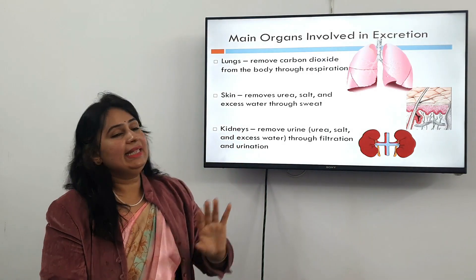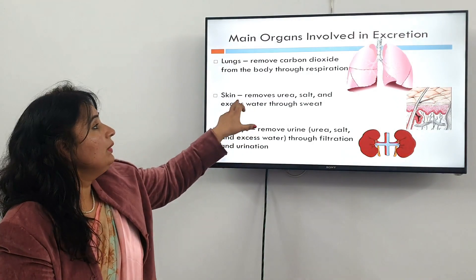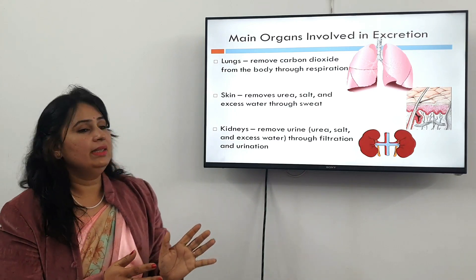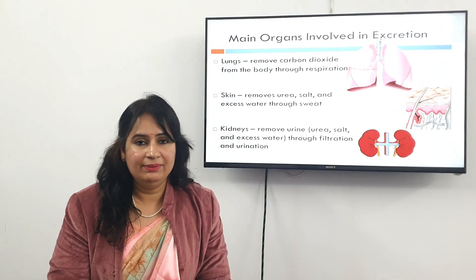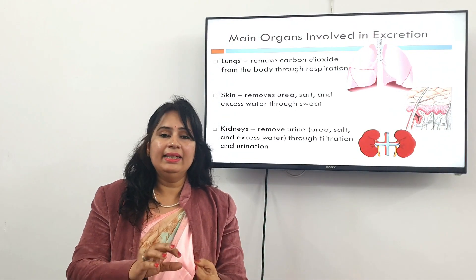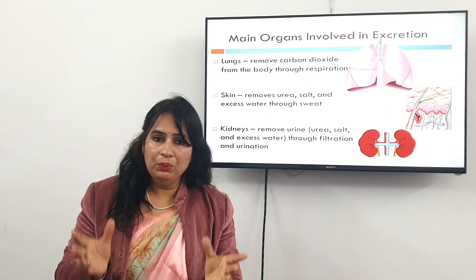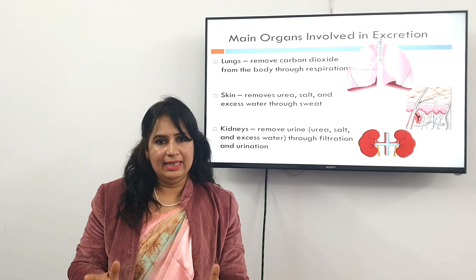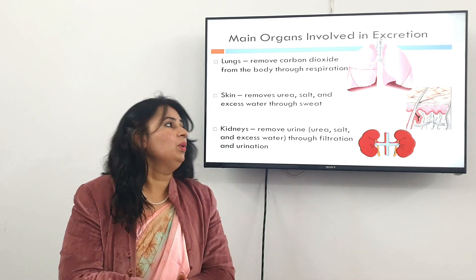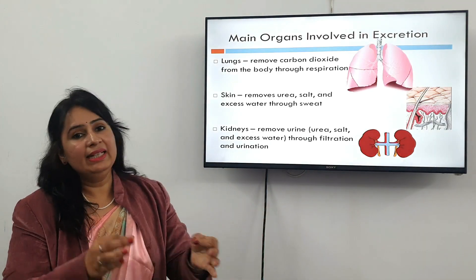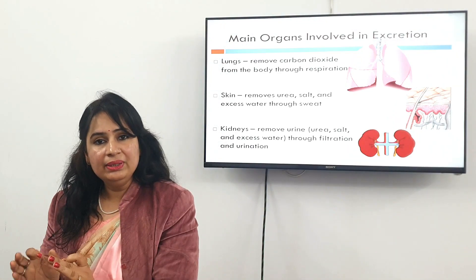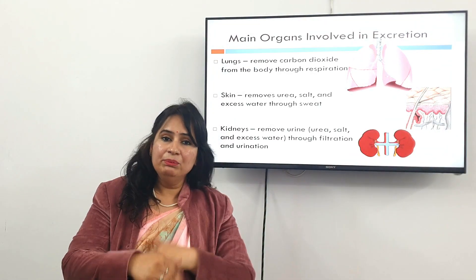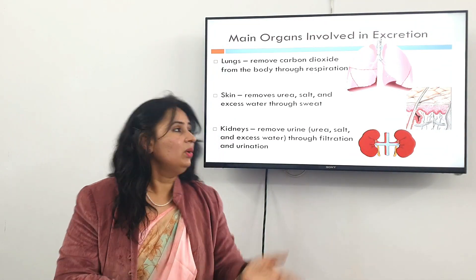The second organ is the skin. The skin removes urea, salt, and excess water through sweat. In our skin there are lots of minor pores, and in these pores there are sweat glands. Through these pores, excess water, urea, salt, and many more things are removed through the skin. This is the second part of our excretion system.